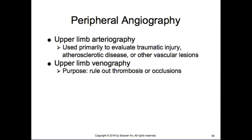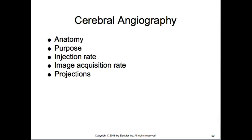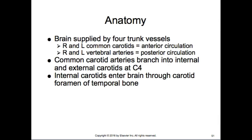Upper and lower limb angiography is used to rule out occlusions, thrombosis, traumatic injury, and lesions. Lower limb studies are done frequently for deep vein thrombosis, which can lead to pulmonary embolism. Filters can be placed to break up large blood clots in the venous system. For cerebral angiography, the brain is supplied by four vessels: the right and left common carotid arteries (anterior circulation) and the right and left vertebral arteries (posterior circulation).